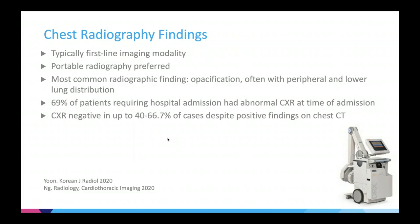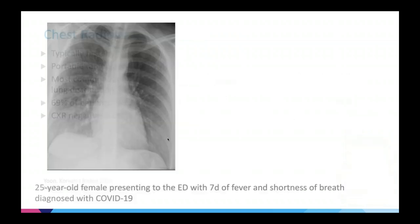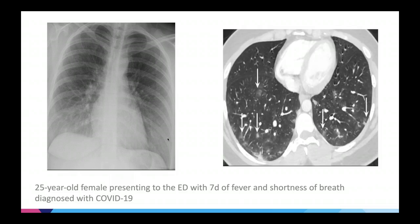Typical findings on chest CT include bilateral, peripheral, patchy ground glass opacities with or without consolidation. These ground glass opacities may have a round morphology, which is quite typical. The peripheral and posterior aspects of the lungs and lower lobes are more frequently involved. Here is a patient with typical COVID-19 infection — you can see bilateral findings, more predominant to the left, with ground glass opacity combined with consolidation, also quite typical for COVID-19 infection.